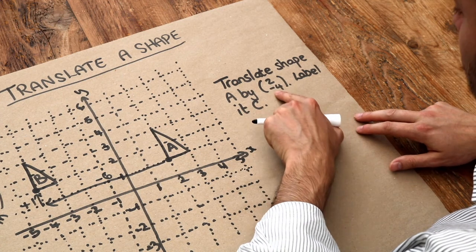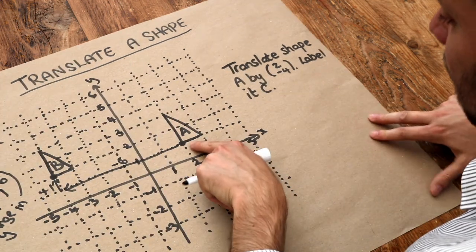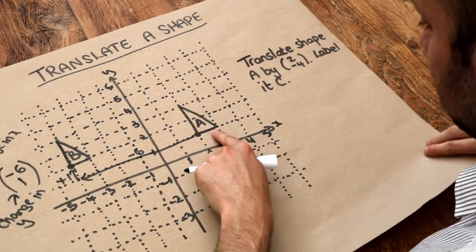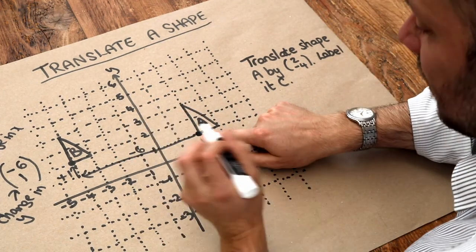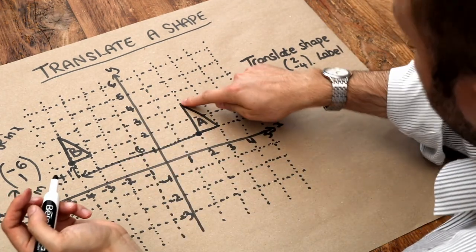Now I've got a new vector here - 2, minus 4 - and we want to translate this shape A. If we use this same point again where the right angle is, though it doesn't matter if you use another point, you can use the top if you wish.